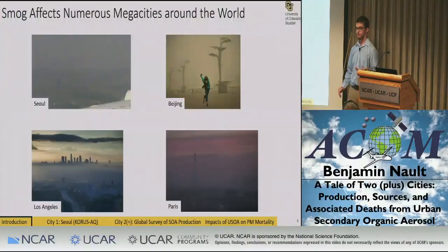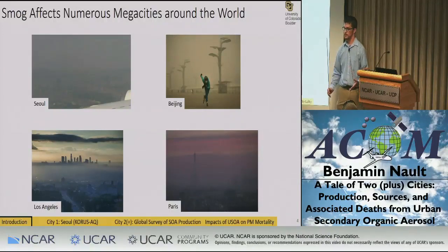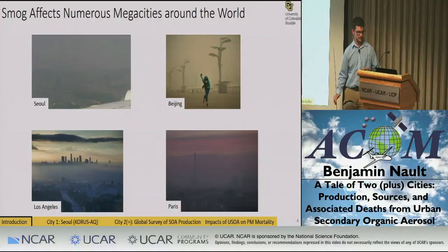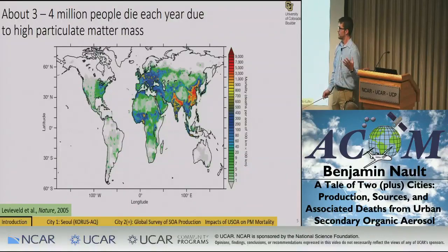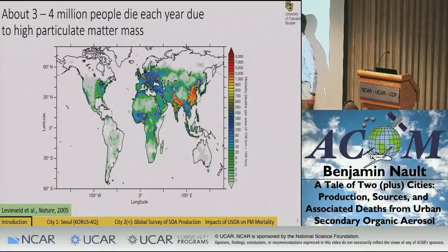As we know, megacities — areas with 5 to 10 million people in a small area — are strongly impacted by poor air quality, mainly from smog or particulate matter, as well as ozone. To really understand what is causing this smog, we have to know the composition of the aerosol in order to know what emissions to reduce. Many studies have related the concentration of particulate matter to mortality, and we see that megacities like Mexico City, Los Angeles, Chicago,